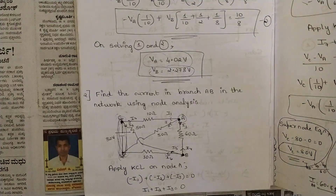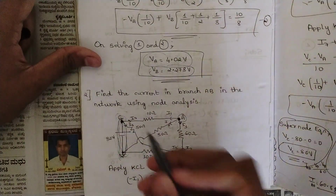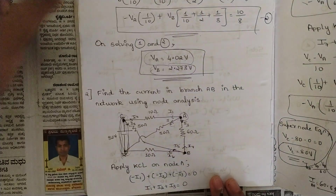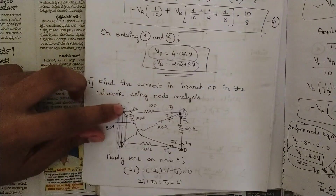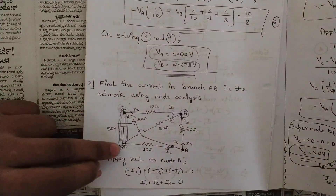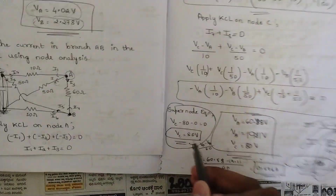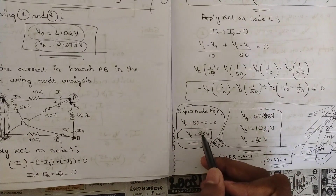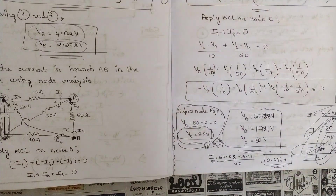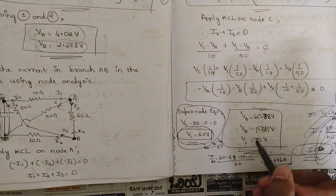Whenever we have one branch without a resistance, that whole branch is called a super node — similar to the super mesh concept in mesh analysis. The super node equation here is: Vc - 80 - 0 = 0, since the last point is grounded. From this super node equation we directly get Vc = 80 volts.